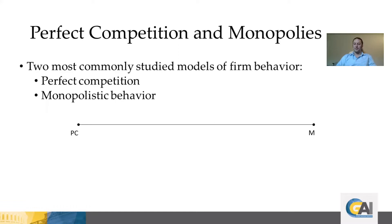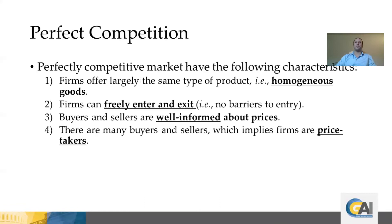Let's start by talking about the perfect competition case first, beginning with the conditions that must be met for a market to be perfectly competitive. First, in a perfectly competitive market, the products offered by the firms need to be homogenous. Each firm's product must be interchangeable with the others' such that buyers have no preferences whatsoever over buying from one firm versus another — we formalize this by saying the goods are homogenous, with no variation across products.